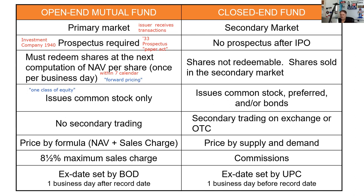Open-end funds do not trade in the secondary market. They're priced by a formula stipulated in the prospectus, which is the NAV plus the sales charge. Test takers, if you ever have an answer set that says it's stipulated in the prospectus, that is a great answer — take that answer.